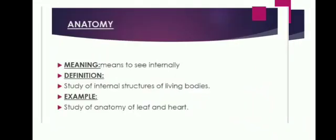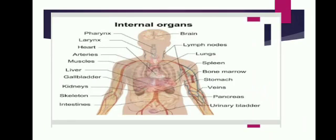The second branch is anatomy. Anatomy means to see internally. Anatomy is the branch in which we study the internal structures of living bodies. When we study the internal structure of a living organism, this is known as anatomy. For example, the anatomy of a leaf or the anatomy of the heart. As I am showing you on screen — when we study internal organs like the brain, lungs, stomach, veins, pancreas, pharynx, and larynx — this study is known as anatomy.